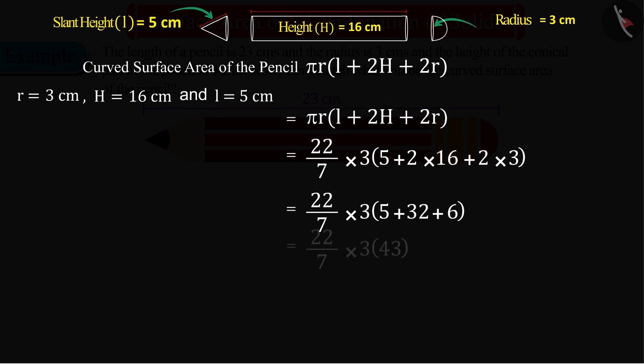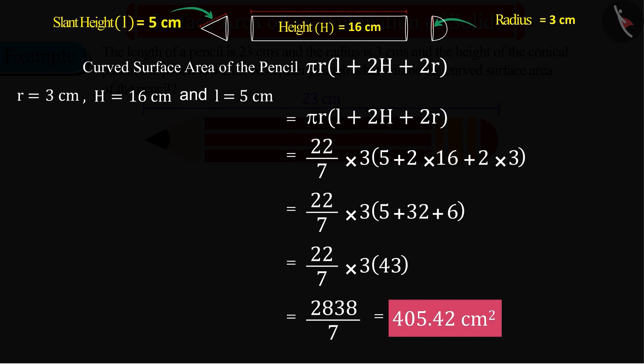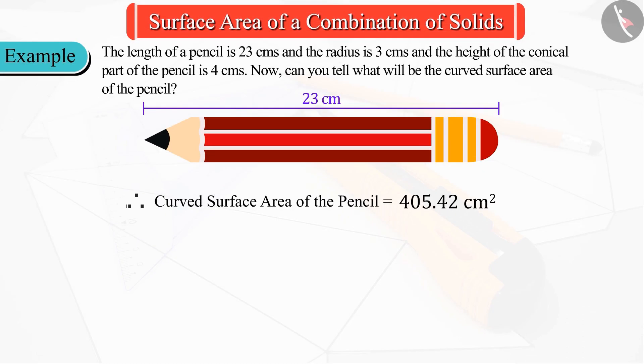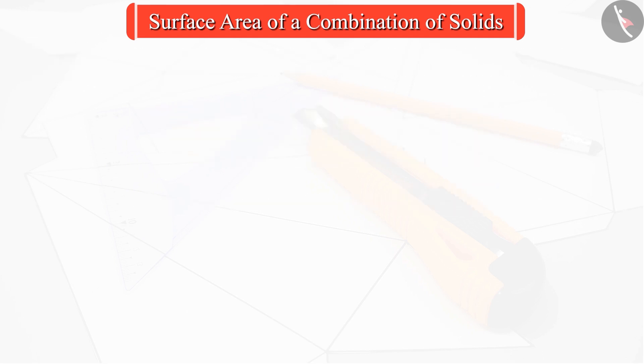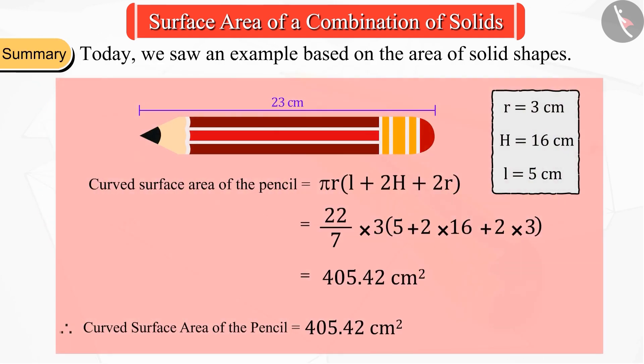So we can say that the curved surface area of the pencil is 405.42 square centimeters. In this video we saw an example based on the area of solid shapes.